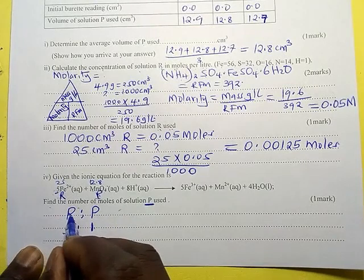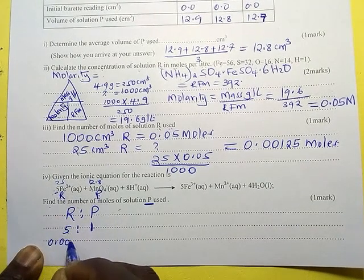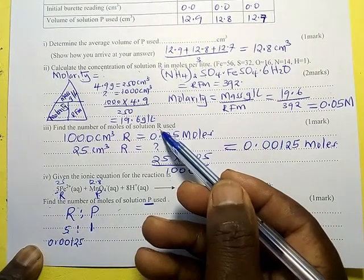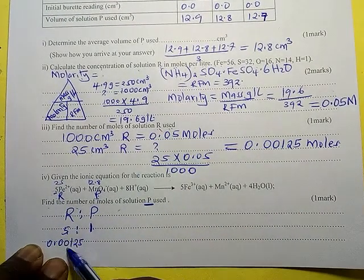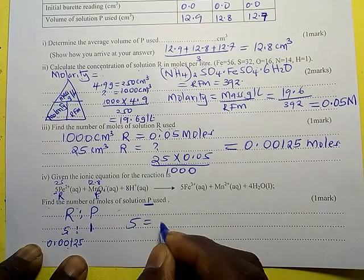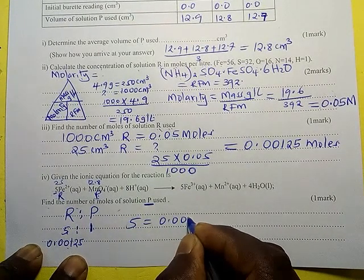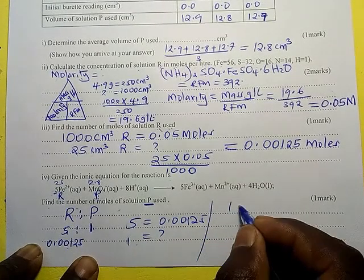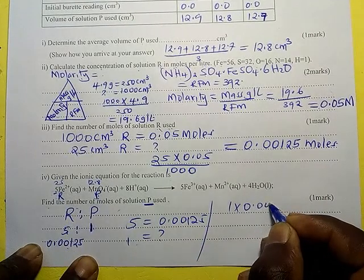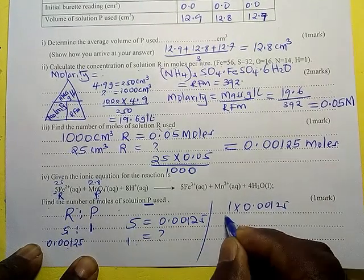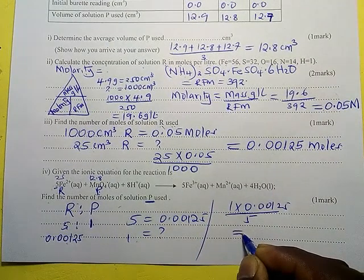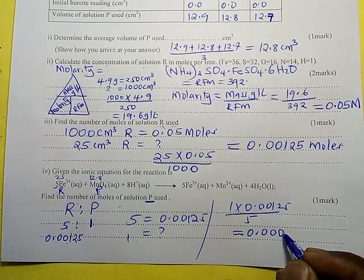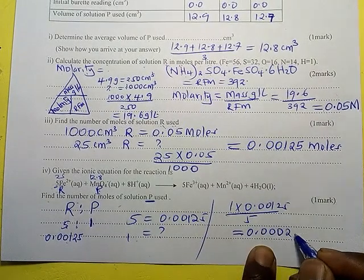We have the number of moles of R, which is 0.00125. Using the ratio R:P = 5:1, if 5 moles of R corresponds to this, what about 1? So: 1 times 0.00125 divided by 5 gives us the number of moles of P.